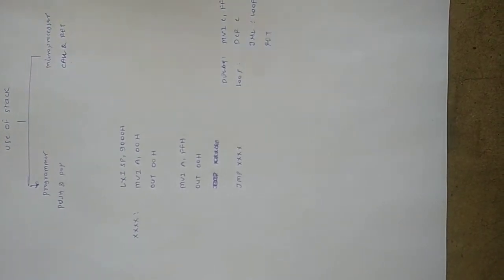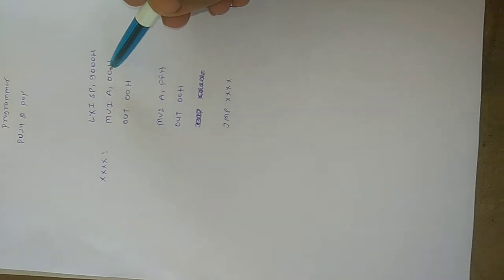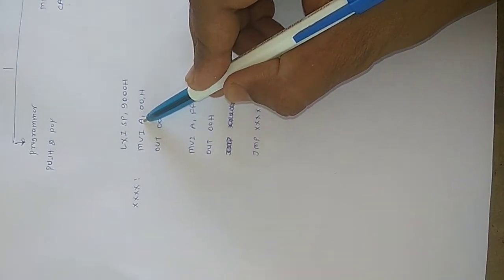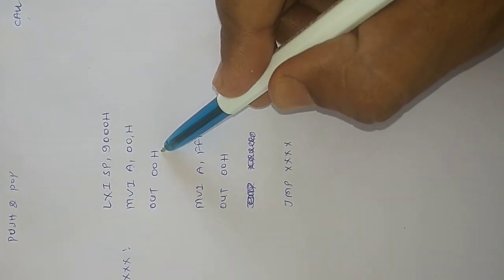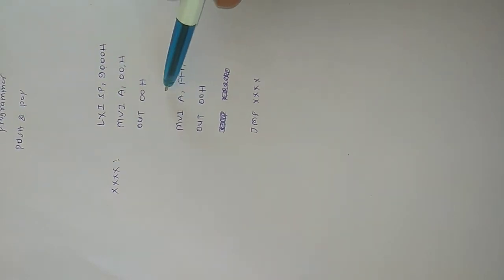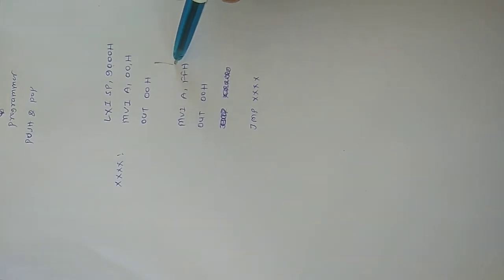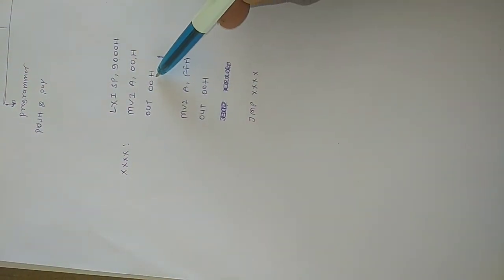The stack stores the memory location from where the microprocessor has to return from the subroutine. I have written a program here for flashing LEDs. I am moving 00h into the accumulator, then displaying the contents of the accumulator on port address 00h. If eight LEDs are connected on port 00h, all LEDs will be off. I then write certain delay instructions so that the LEDs remain off for a certain period of time.